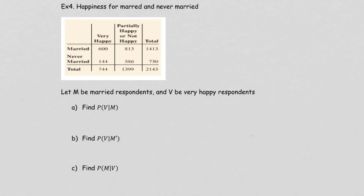Let's try another example — happiness for married and not-married people. The people who were very happy: 744 total — 600 married and 144 not married. Partially happy or not happy: total 1,399 — 813 married and 586 not married. Married people had the larger values. Total research was 2,143.